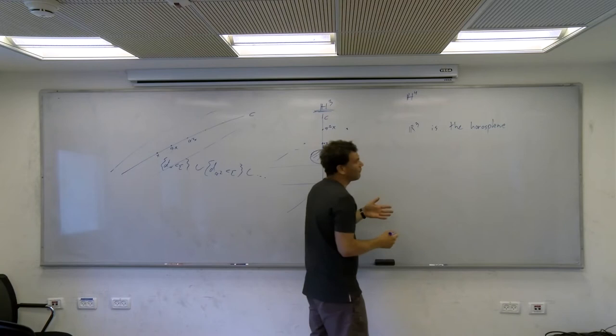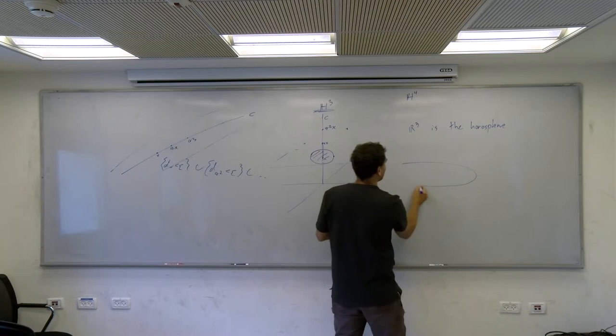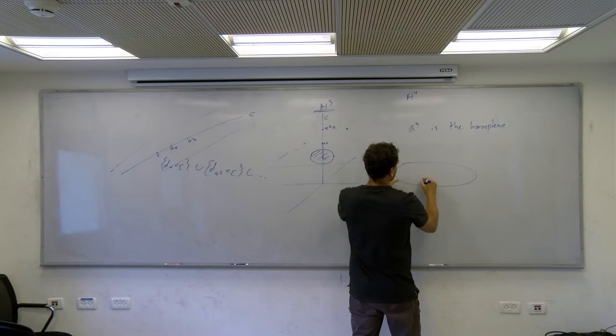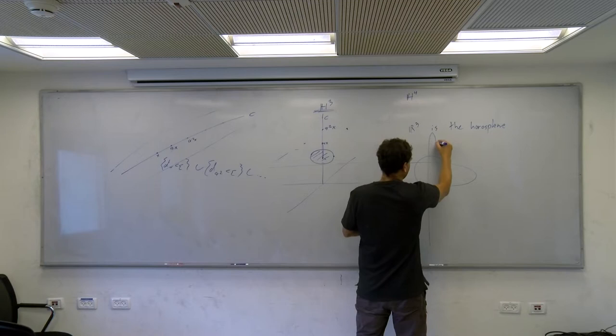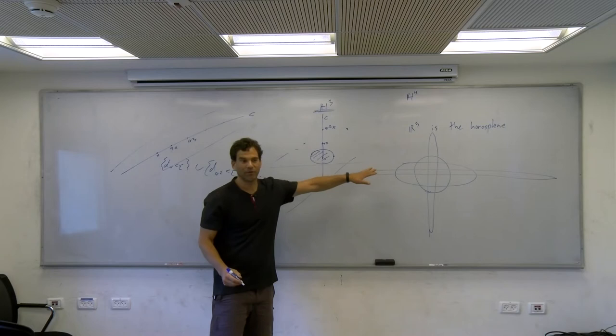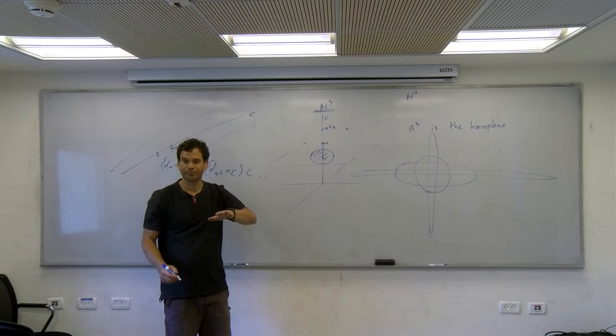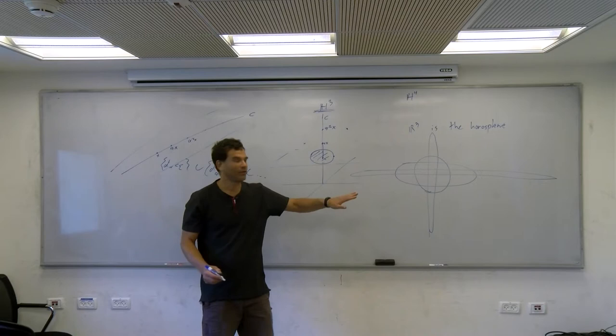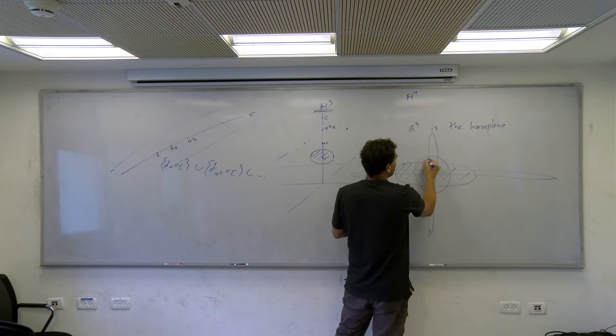In H4, if I look at the intersection of the thin component with the horosphere, I get a union of co-axial ellipsoids — they have the same axis because they correspond to commuting isometries (powers of the same isometry). One might be like this, another like that. The union of ellipsoids gives a complicated shape, even though each individual one is nice.